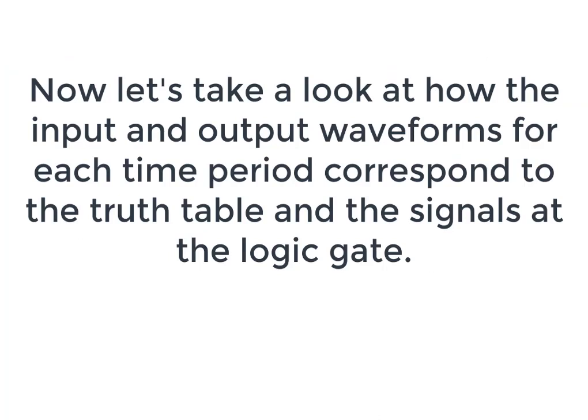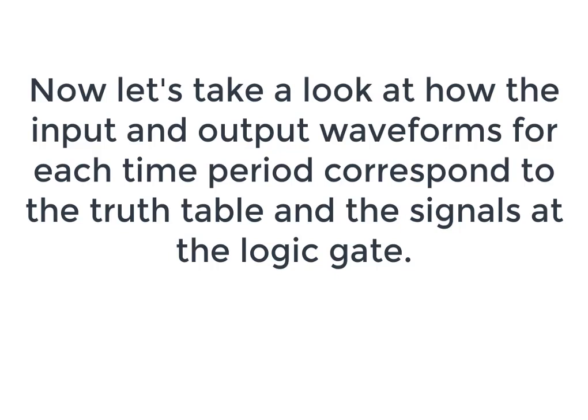Now, let's take a look at how the input and output waveforms for each time period correspond to the truth table and the signals at the logic gate. The series circuit with two switches operates the same way as a two-input AND gate.